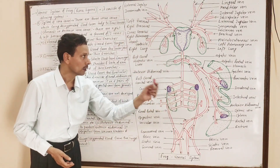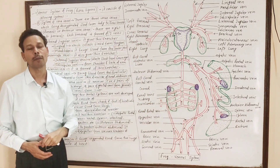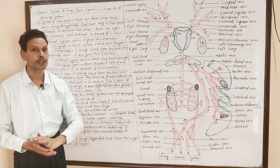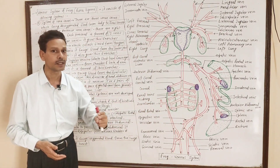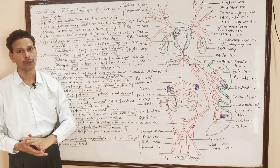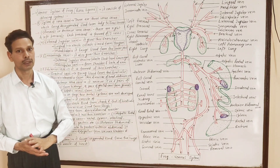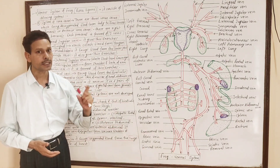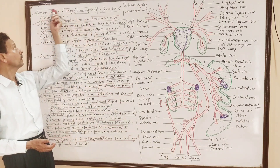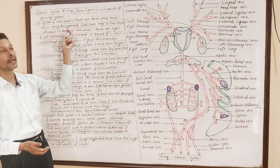Dear students, today we will cover another important topic for BSc second year, fourth semester students — that is the venous system of Rana (frog). This system includes the following components.